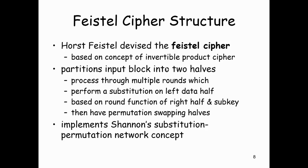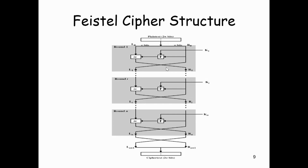Here in the diagram, the input block to each round is divided into two halves, denoted as L and R for the left half and right half respectively. In each round, the right half R goes through unchanged, but the left half L goes through an operation that depends on R and the encryption key K1.